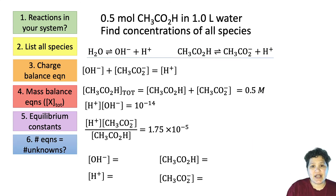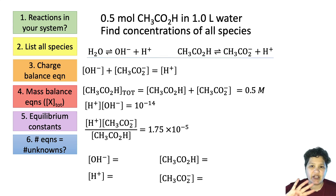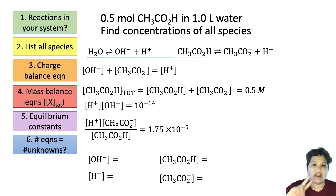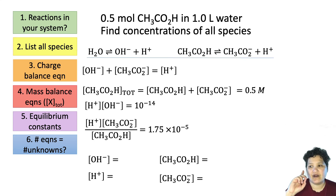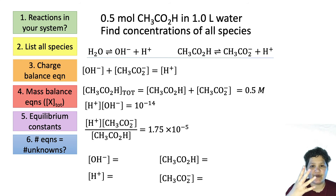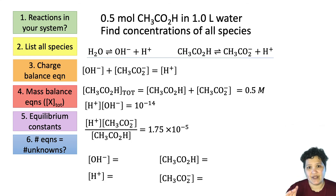Now let's double check: do we have the same number of equations as unknowns? We generated four unknowns: OH⁻, H⁺, acetic acid, and acetate. We have our charge balance equation, one mass balance equation, and two equilibrium constants — four equations total. So we have set this up correctly and are ready to solve it. But that's not happening in this video — we're going to set up one more first.